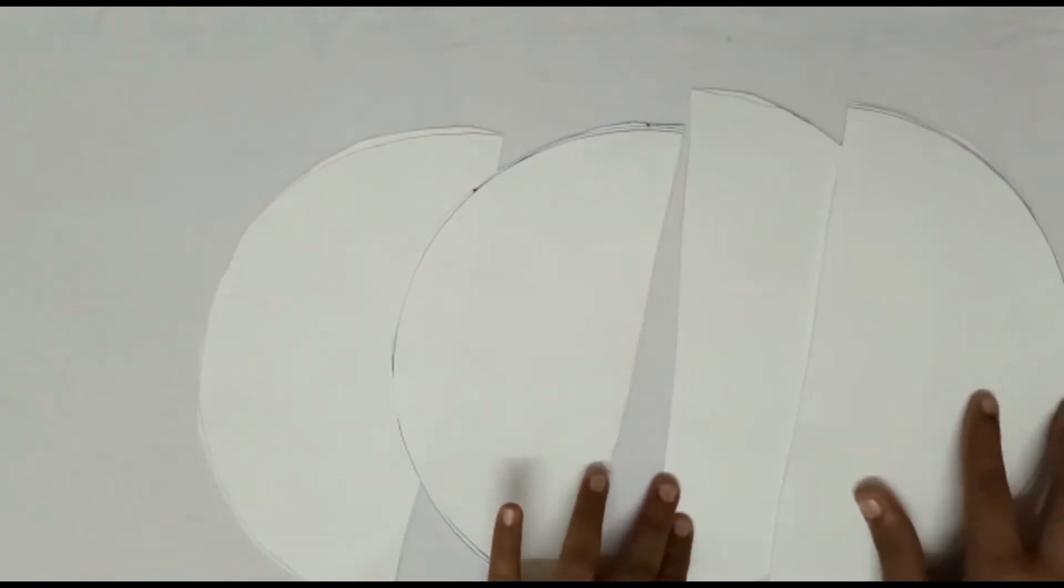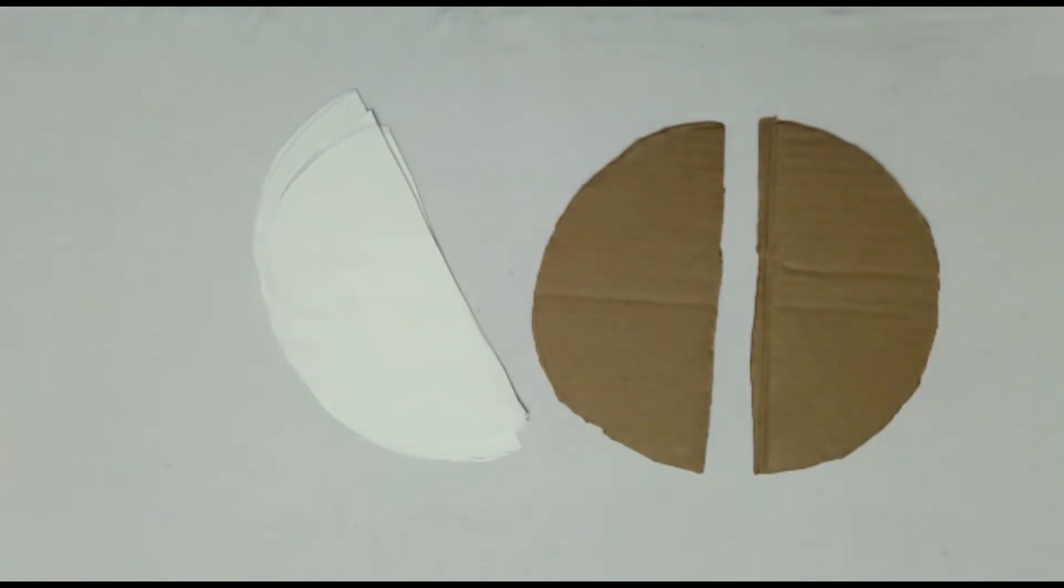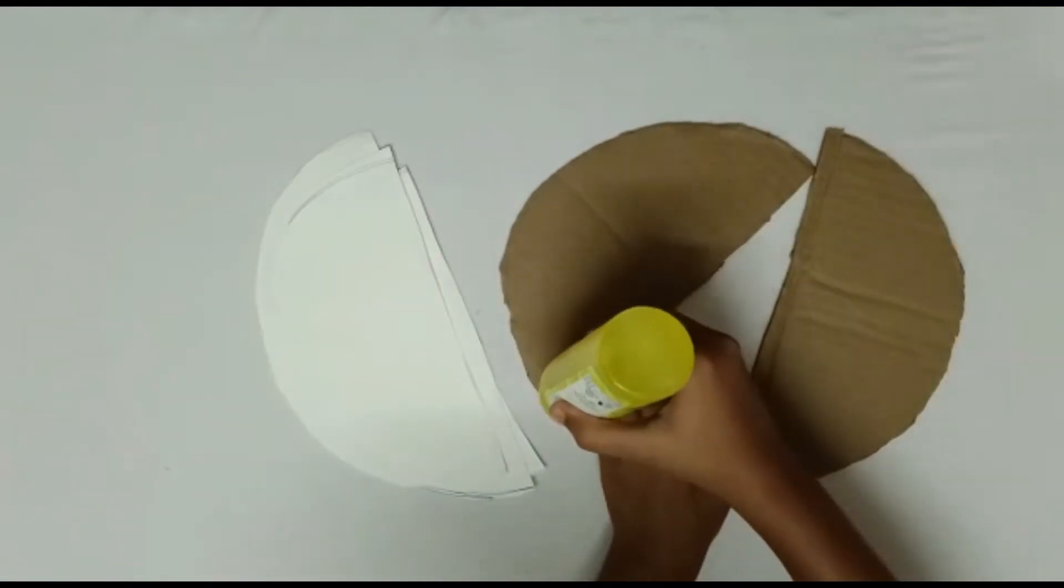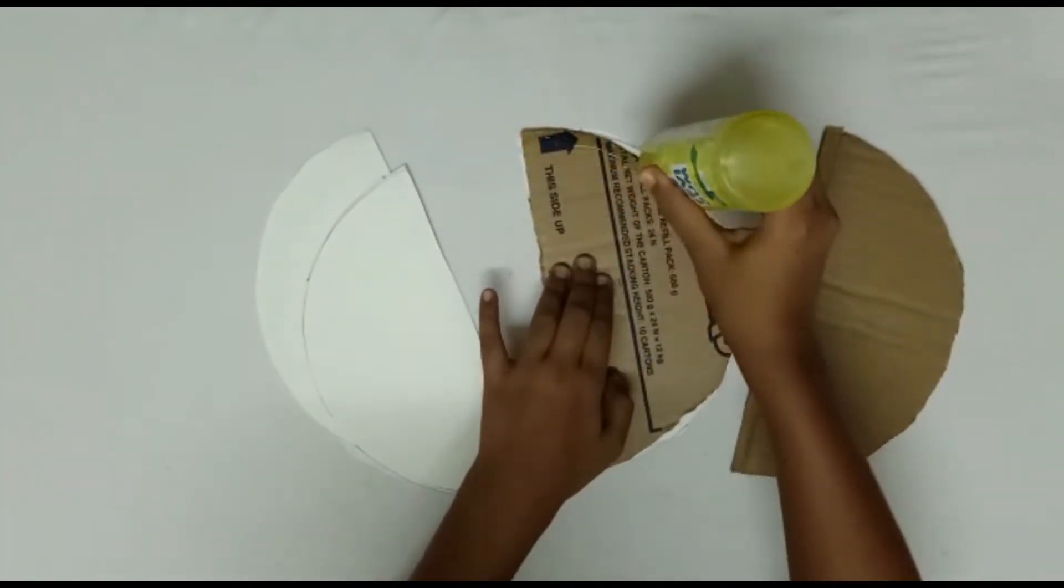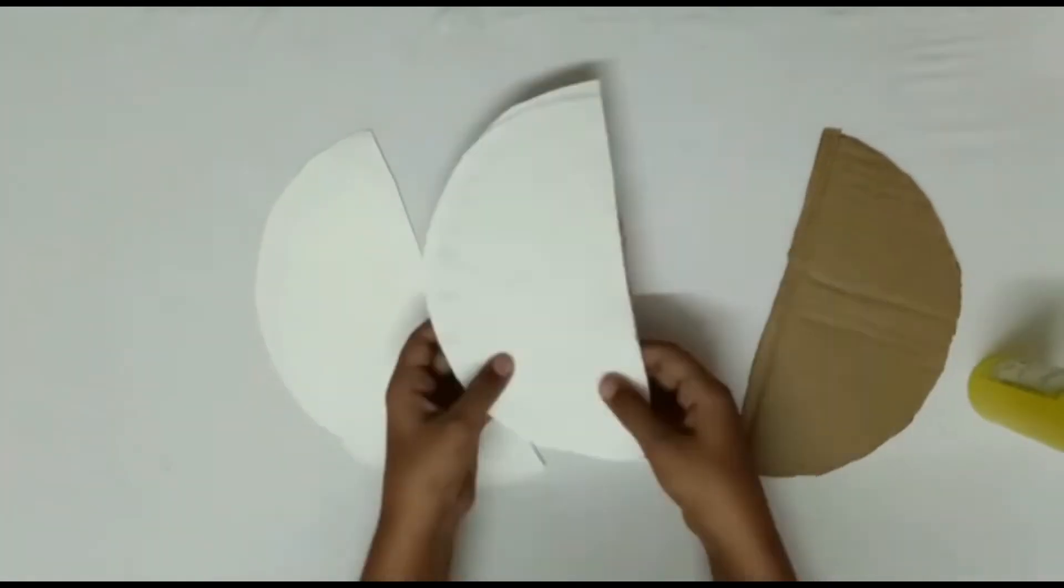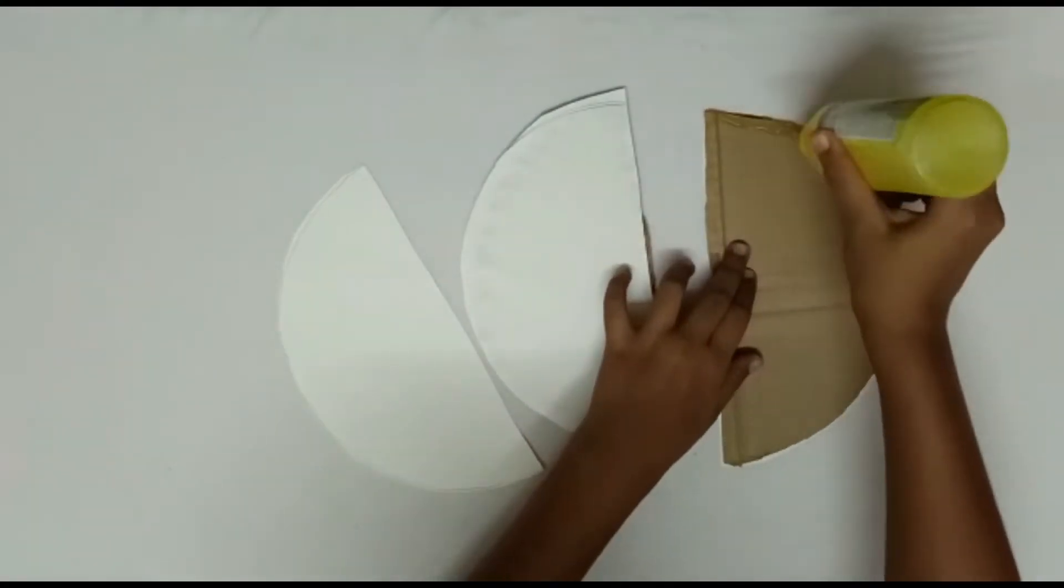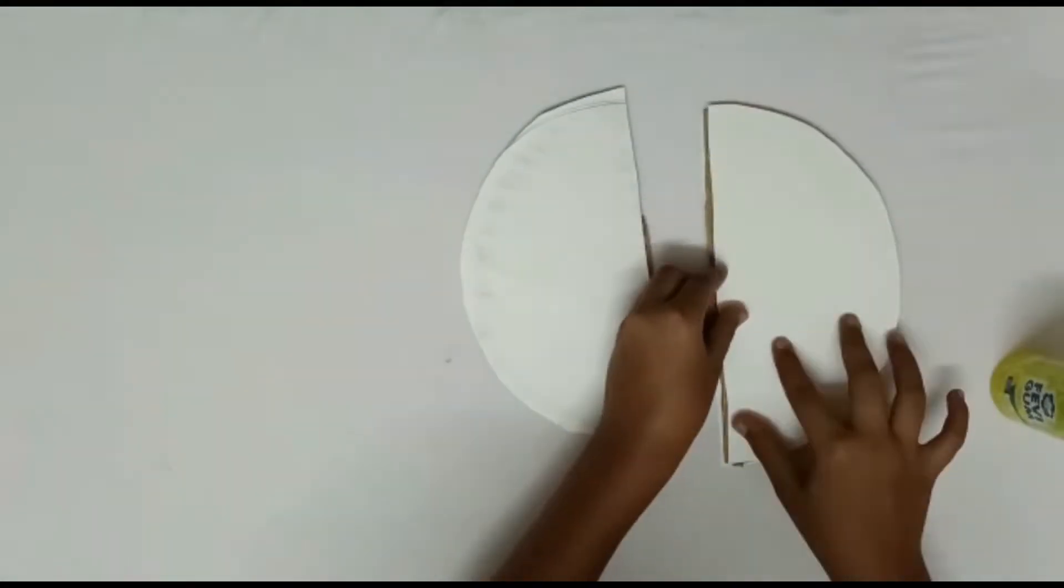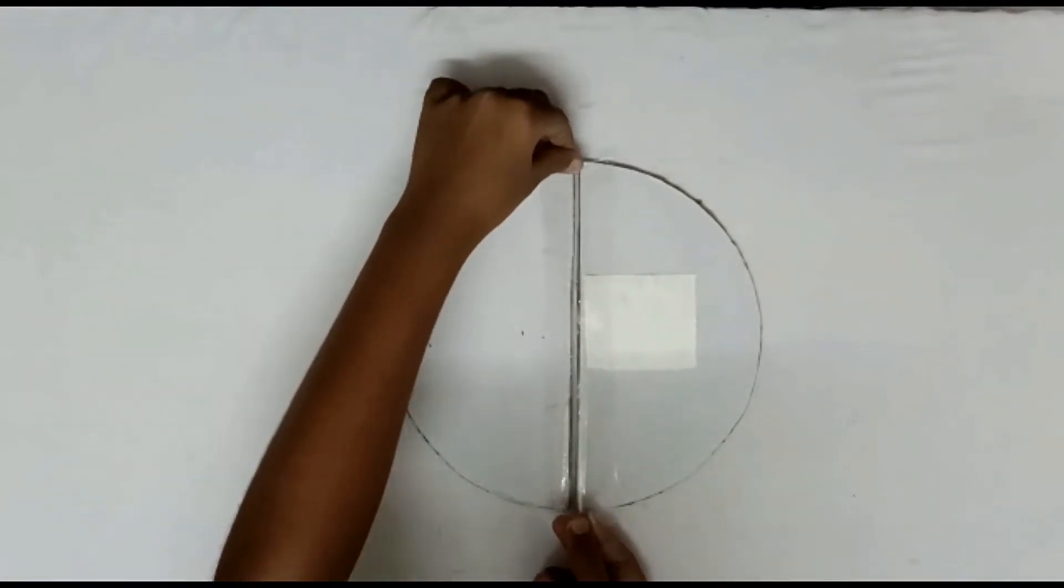Now follow the same process to cut the cardboard. Take the cardboard and the papers and paste the papers on both sides of the cardboard. Now stick the sellotape in between the cardboard.